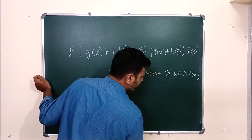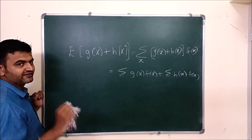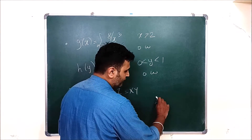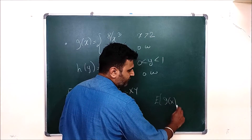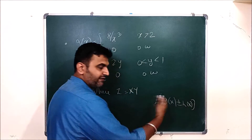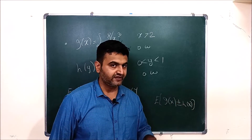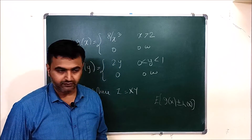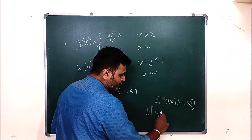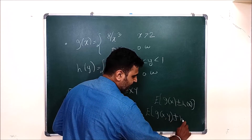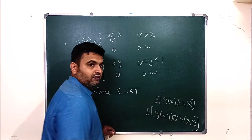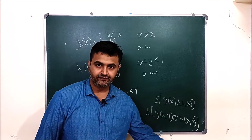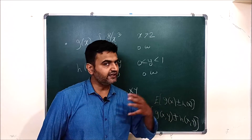The additivity property for g(X) ± h(X) that we saw for one variable also extends to multiple random variables. For a joint distribution with two random variables X and Y, E[g(X,Y) ± h(X,Y)] = E[g(X,Y)] ± E[h(X,Y)]. The same holds for three, four, and in general n variables.